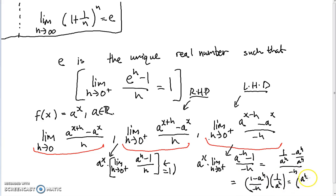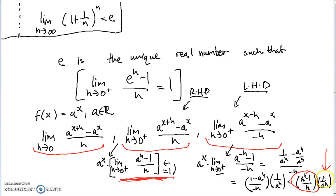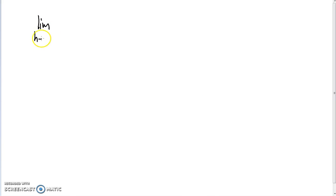This equals (A to the H minus 1) over H, times 1 over A to the H. If the limit as H tends to 0 from the right of (A to the H minus 1) over H exists and equals 1, then we don't have to worry about the extra term, because the limit of A to the negative H as H approaches 0 is simply 1, and the A to the x term is still outside. So if we can find a real number A such that this limit equals 1, we would be able to differentiate exponential functions. E turns out to be the unique real number for which that's true. So let's try and prove that.